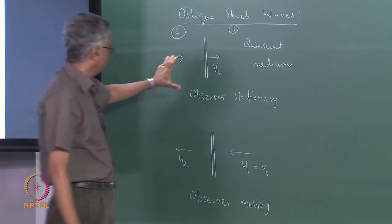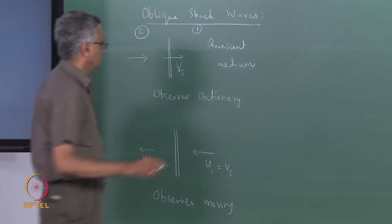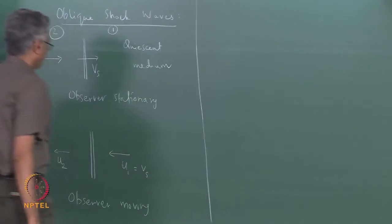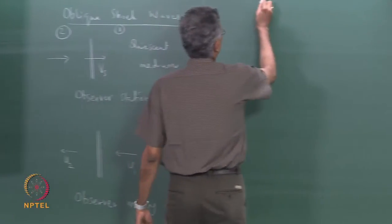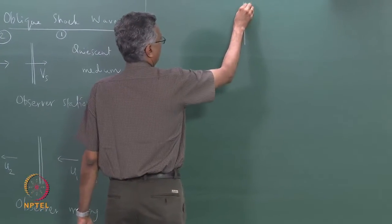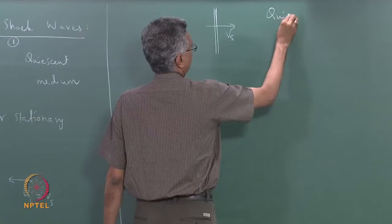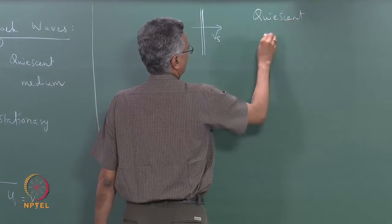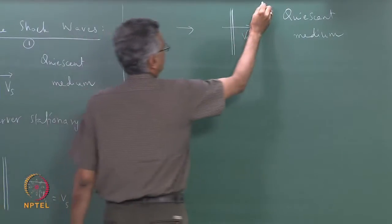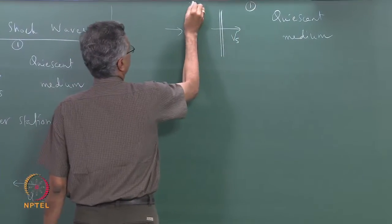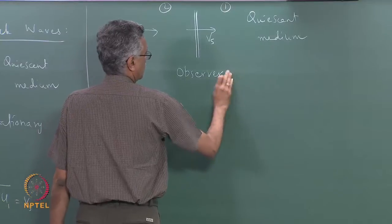For the oblique shockwave, we start with the same scenario. The only difference is — let me draw this for the oblique shockwave. We label the upstream state as 1 and the downstream state as 2, just as before. This is in a frame of reference where the observer is stationary.